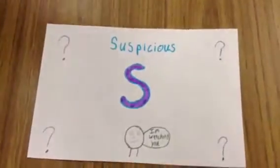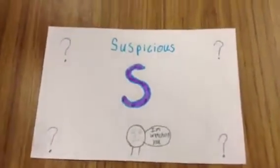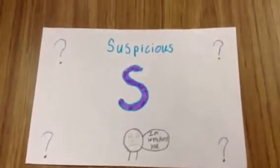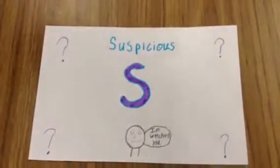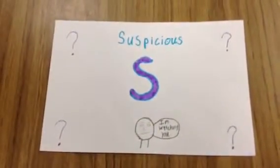S is for suspicious. Dovey is suspicious about multiple things in the book. She is very suspicious about her lawyer and who killed Parnell.